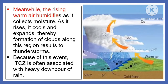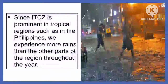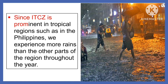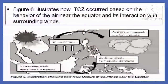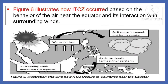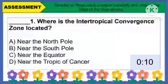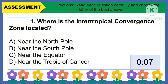Meanwhile, the rising warm air humidifies as it collects moisture. As it rises, it cools and expands, thereby forming clouds along this region, resulting in thunderstorms. Because of this event, ITCZ is often associated with heavy downpours of rain. Since ITCZ is prominent in tropical regions such as in the Philippines, we experience more rains than other parts of the region throughout the year.